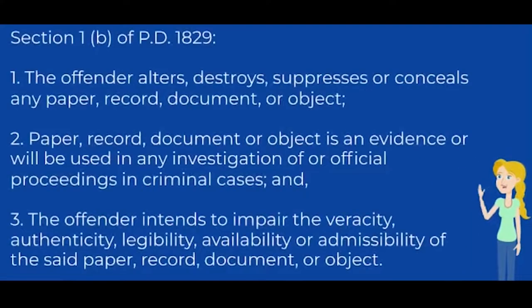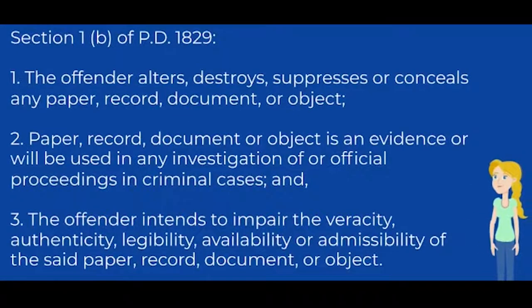Section 1, Paragraph B of PD No. 1829: the elements are, first, that the offender alters, destroys, suppresses, or conceals any paper, record, document, or object; second, that such paper, record, document, or object is evidence or will be used in any investigation of or official proceedings in criminal cases; and third, that the offender intends to impair the veracity, authenticity, legibility, availability, or admissibility of the said paper, record, document, or object.